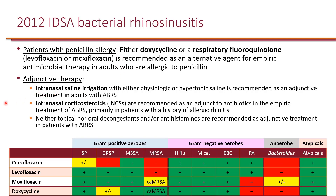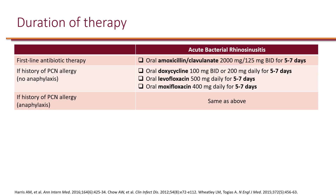There are also recommendations for adjunctive therapies. Intranasal saline irrigation and intranasal corticosteroids can be helpful in conjunction with antibiotics. The IDSA does not recommend topical or oral decongestants, and they also do not recommend antihistamines specifically for bacterial rhinosinusitis due to lack of efficacy. Lastly, the duration of therapy for acute bacterial rhinosinusitis is 5 to 7 days regardless of which agent is used.